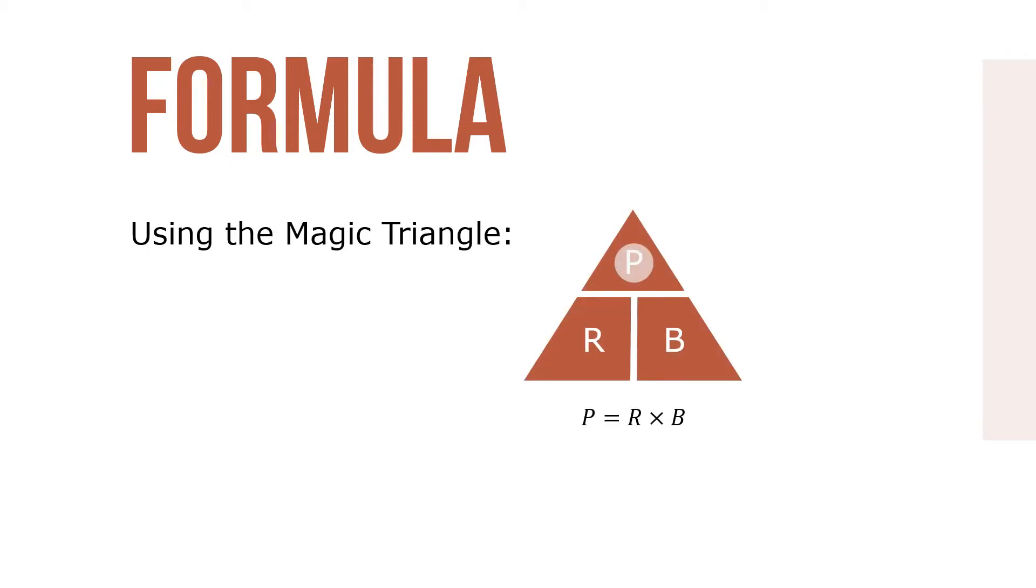I prefer to use the magic triangle when thinking about these portion formulas. If we use the magic triangle, we see that P equals R times B.